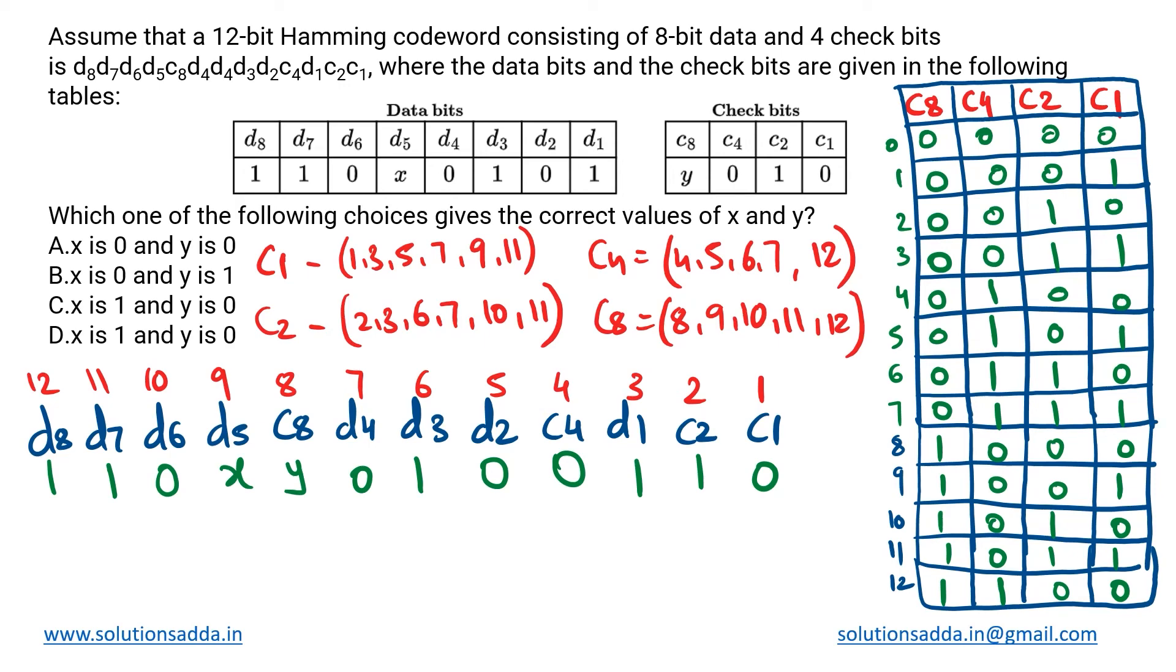This is a computer networks question based upon Hamming code. We have been given a 12-bit Hamming codeword that consists of eight data bits and four check bits. The sequence is given over here as it was in the original question.